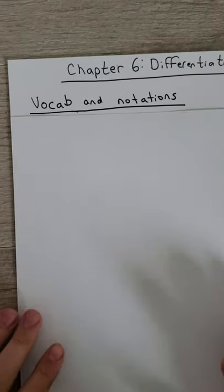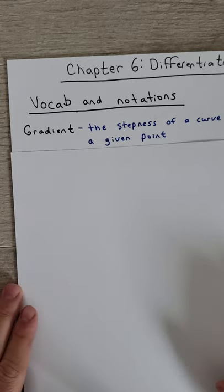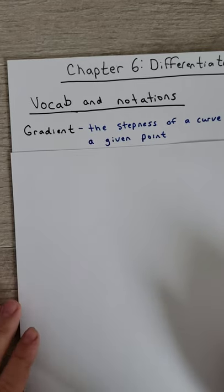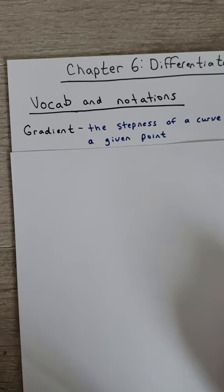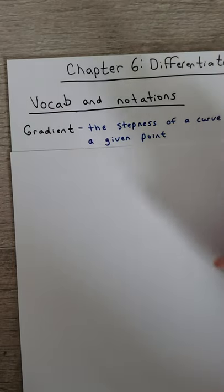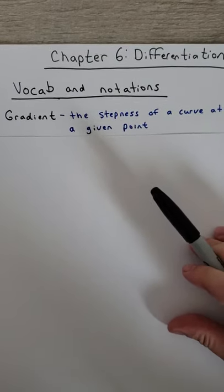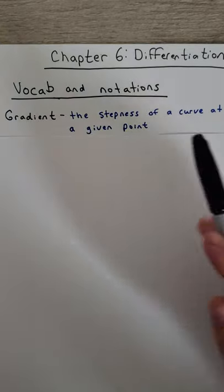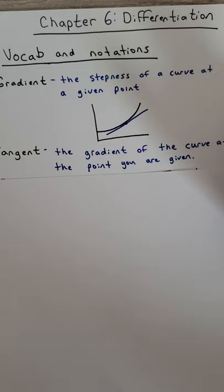Chapter 6 vocab and notations: a gradient — you should already be familiar with this. Gradient is just the steepness of a curve at a given point. In coordinate geometry, gradient is slope, and you can only take the slope of a straight line. So differentiation and calculus is about dealing with curves — how do you find the derivative of an equation to give you the gradient or slope of a curve? Gradient and tangent, as far as derivatives go, are pretty much the same thing.